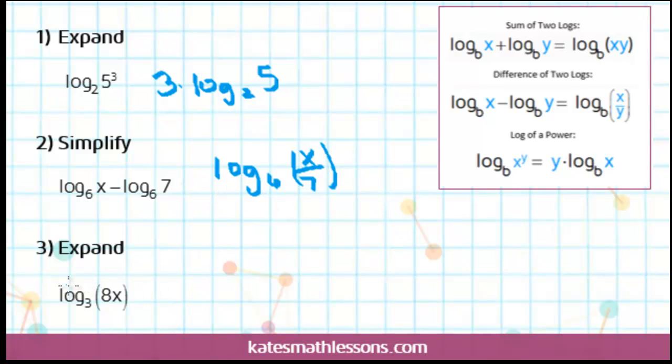This last one here asks us to expand the log, and we have a product inside of the logarithm. So the rule that we're going to want to use is this top one here. If I have a product, two things here inside of the logarithm, I can split it up into two different logs. So I'll do the log of the first one plus the log of the second one. The base stays the same, so these are both going to be base 3 logs. So log base 3 of 8 plus log base 3 of x. So that would be considered the expanded version of the logarithm.